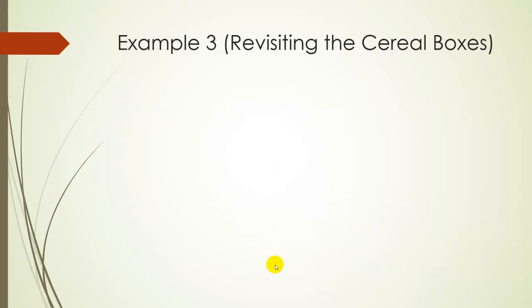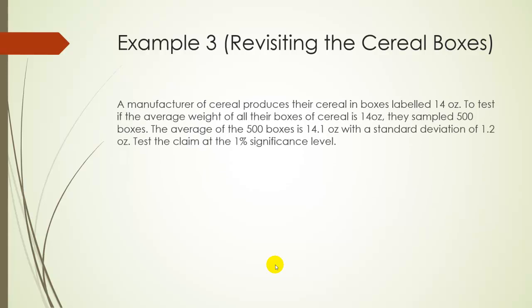All right, let's move on. So let's revisit our cereal boxes example from last class, not last class last week. A manufacturer of cereal boxes produces their cereal in boxes labeled 14 ounces to test if the average weight of all the boxes is 14 ounces. We sampled 500 boxes. The average of those 500 was 14.1 ounces with a standard deviation of 1.2. Let's test this claim at the 1% significance level. So setting up the normal alternative hypothesis, and again, this is the same as last week. We're going to say the true mean is 14 for H-O, and H-A is that the true mean is not equal to 14.